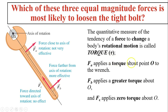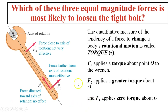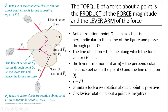The quantitative measure of the tendency of a force to change a body's rotational motion — that means to rotate it — is called torque. Torque is a twisting effort. F-A applies a torque about O to the wrench, but it's not very effective. F-B would apply a greater torque about O. F-C will apply zero torque about O because you cannot twist the bolt at all if you apply force F-C. To calculate the torque: the torque of a force about a point is the product of the force magnitude and the lever arm of the force.